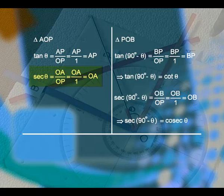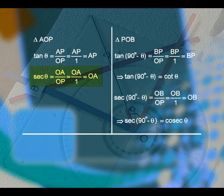Now, we see secant theta in the same triangle A, O, P. Secant theta is equal to hypotenuse by adjacent side. The hypotenuse is OA and the adjacent side is OP, which equals OA by 1, equal to OA.